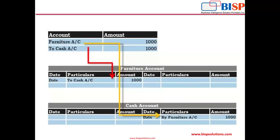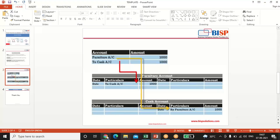Here is an example: I have passed an entry for purchasing furniture in cash, so the entry is — Furniture Account debit to Cash Account credit with 1000. Now there are two ledgers: the Furniture Account and the Cash Account. In the Furniture Account, the entry will be posted as 'to Cash Account,' and in the Cash Account, it will be posted as 'by Furniture Account.' So first we pass the journal entry, and then we post it into the ledger accounts.